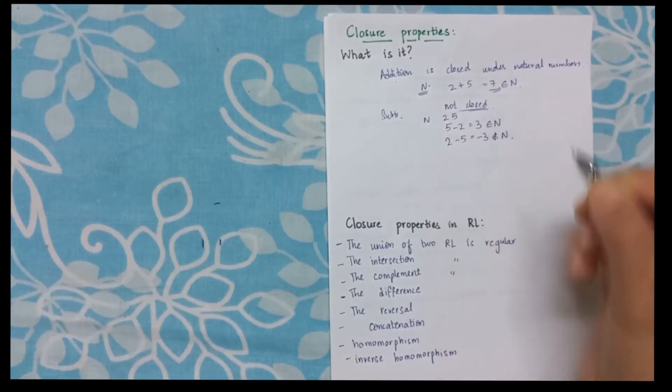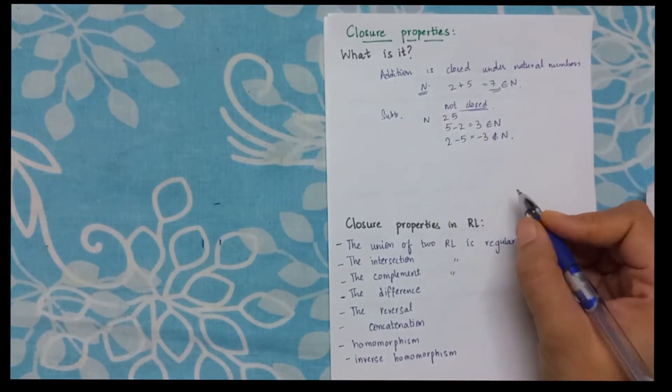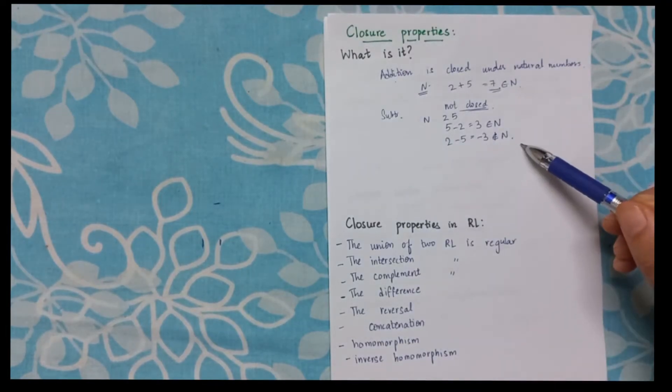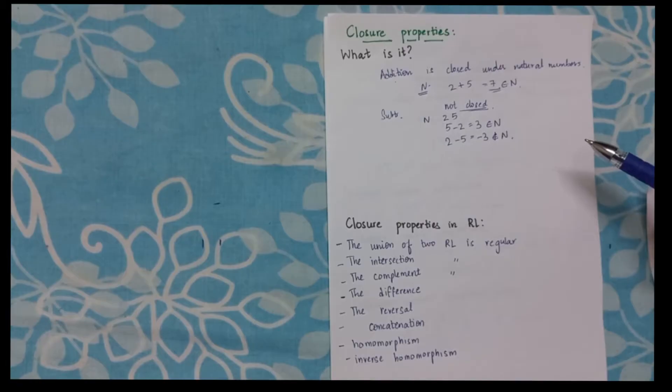So this is the meaning of closure properties. If I apply an operation, am I getting the result from the same set? Then it is called closure.